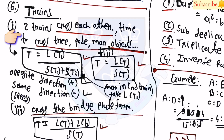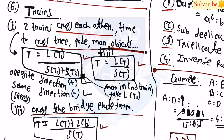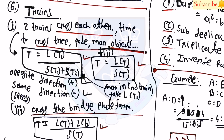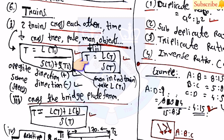For train problems, there are key formulas. To find the time for a train to cross a tree, pole, man, or stationary object: t = L(t1) / (S(t1) + S(t2)). In general, t = L(t) / S(t). If a man is in the second train, use the length of train one. Use the positive sign for trains moving in opposite directions and negative sign for the same direction. For crossing a bridge or platform: t = (L(t) + L(b)) / S(t). In any case, time = relative length / relative speed.